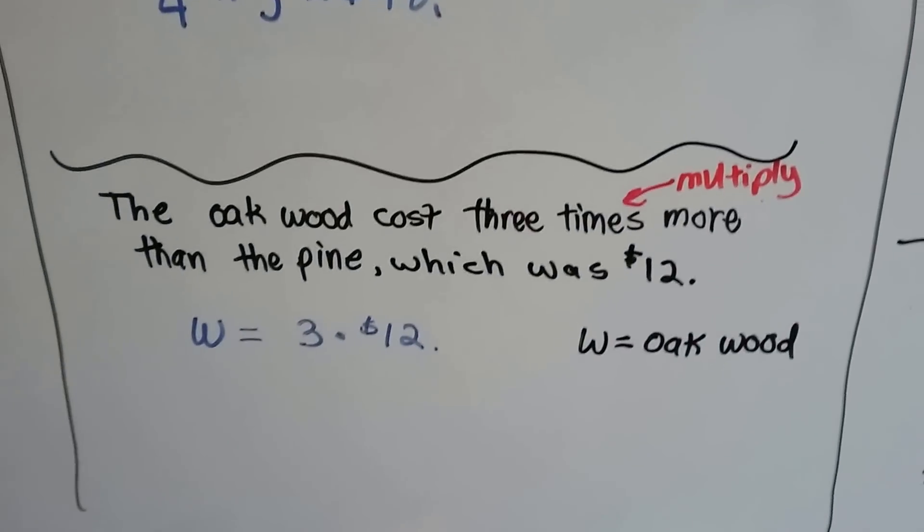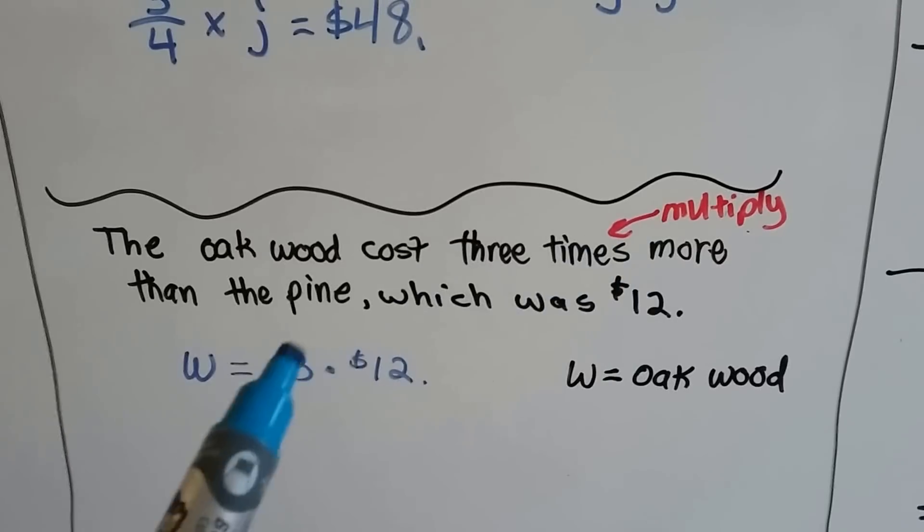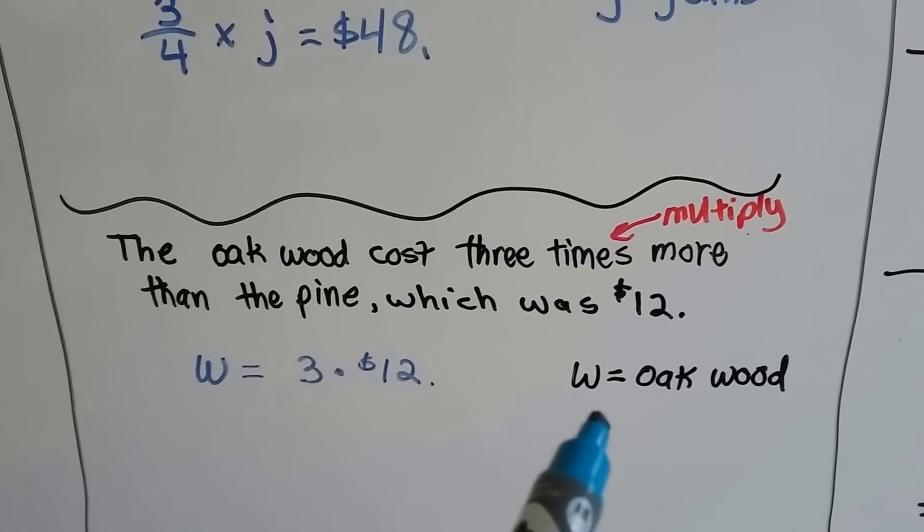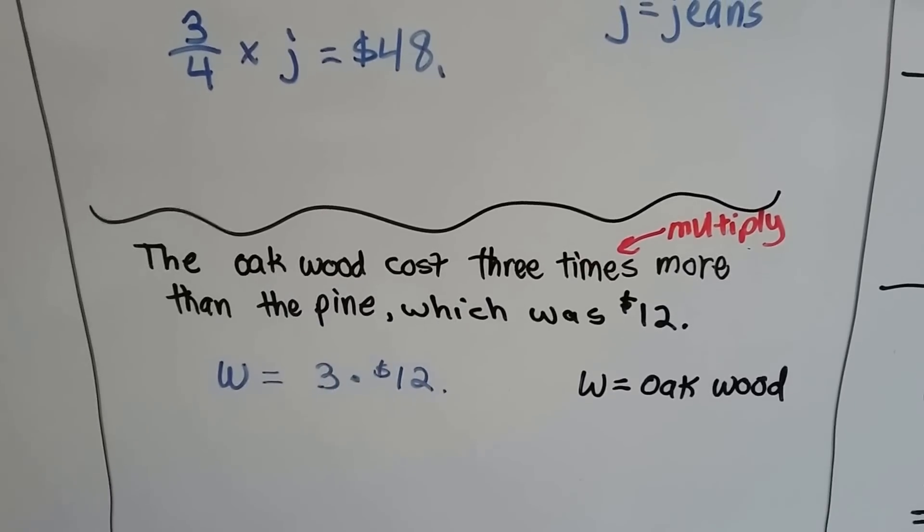The oak wood costs 3 times more than the pine, which was $12. 3 times more tells us we got to multiply. W, which is the oak wood, is 3 times $12, 3 times the price of the pine.